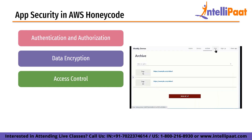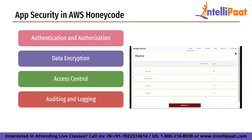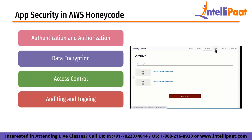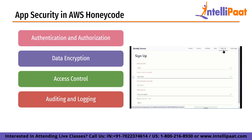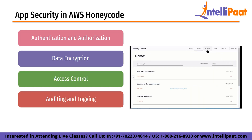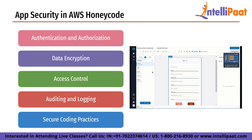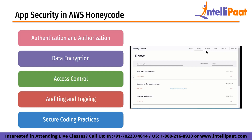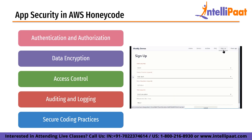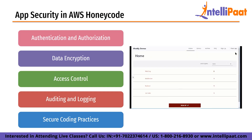Access control should be defined based on the roles and responsibilities of users. Next is auditing and logging. Auditing and logging are important aspects of app security as they enable developers to track user activity and identify security threats. In Honeycode, these can be implemented using built-in mechanisms or by integrating with an external logging provider. Logs should be monitored regularly for security threats. And finally, secure coding practices are essential for app security. Developers should follow secure coding practices such as input validation, error handling and secure communication protocols.